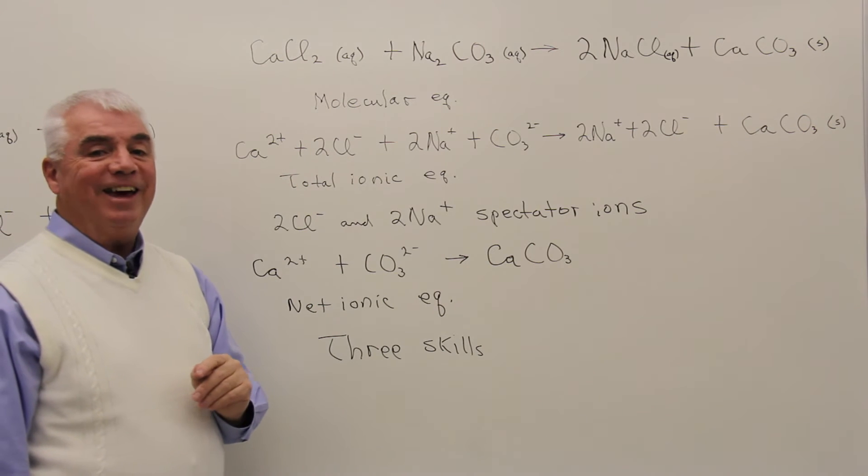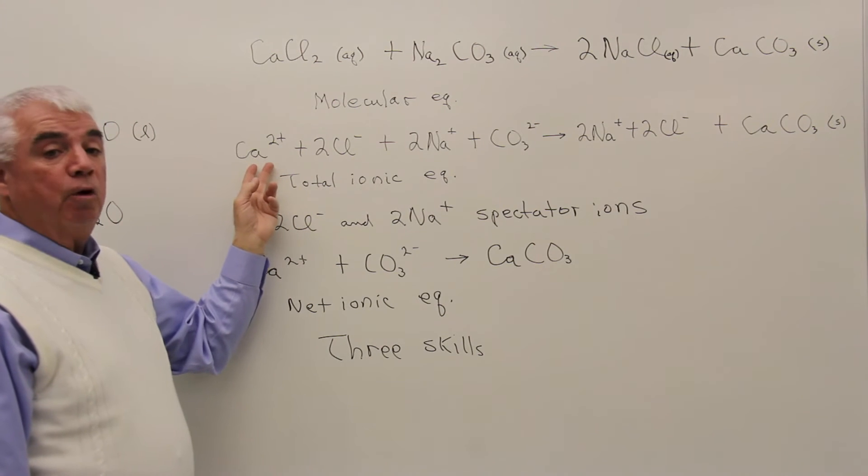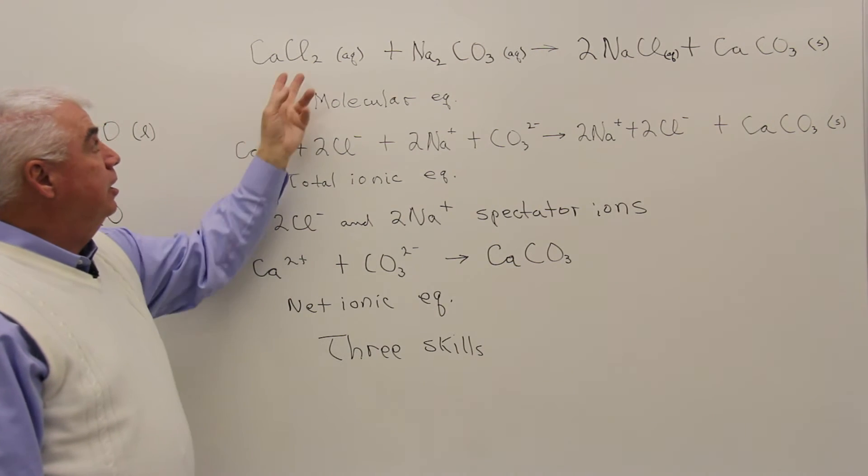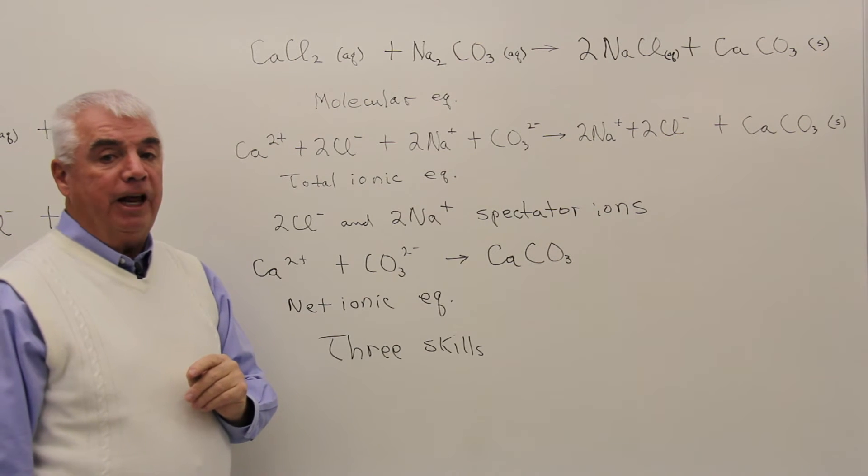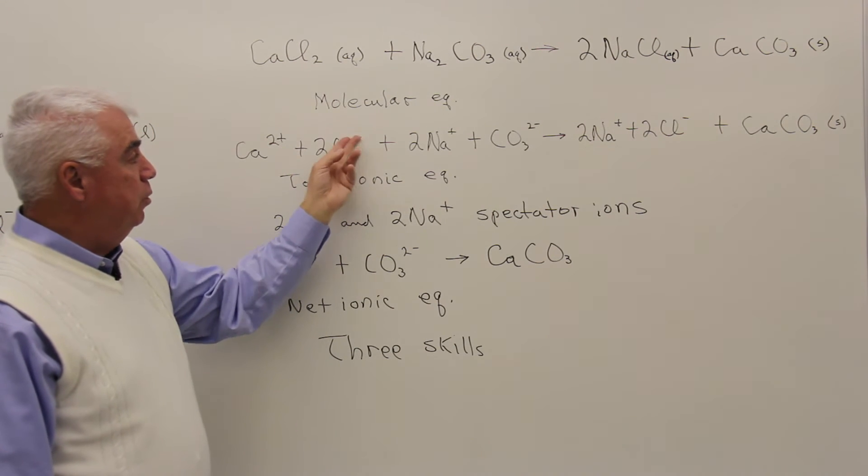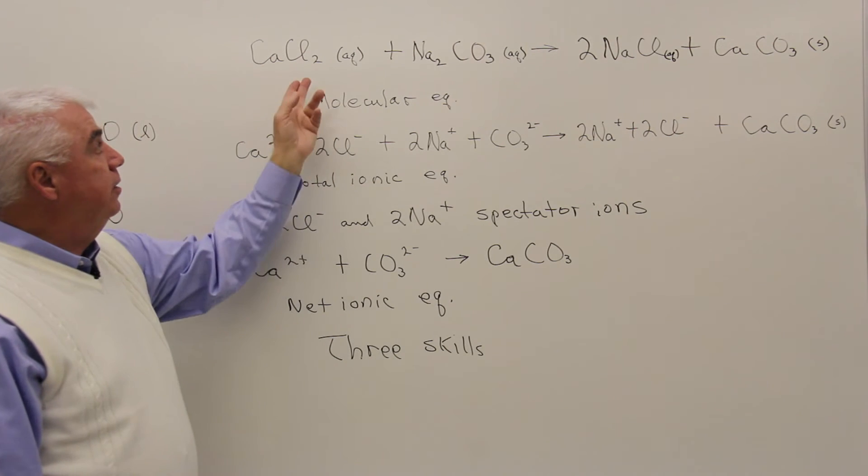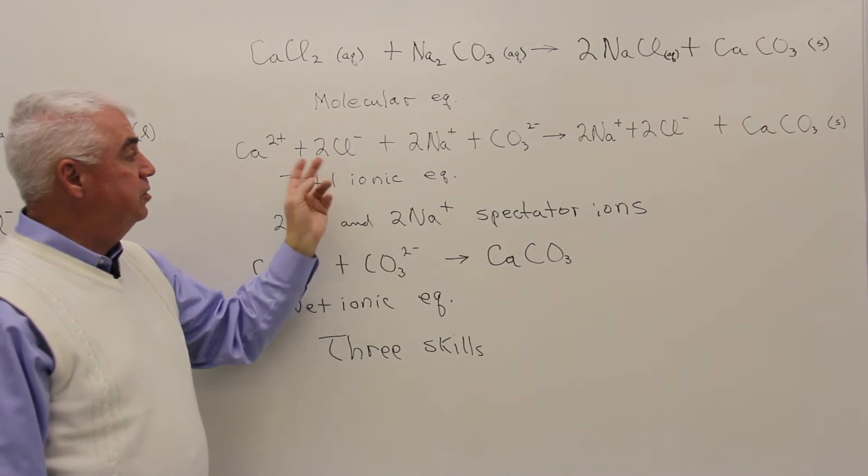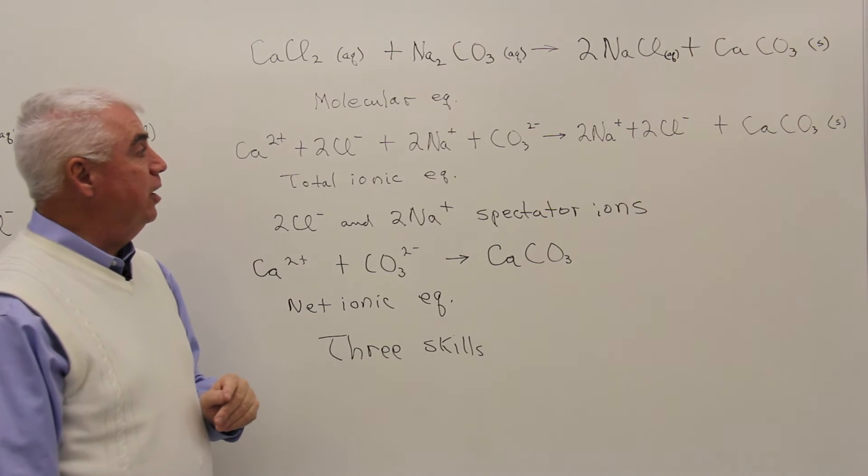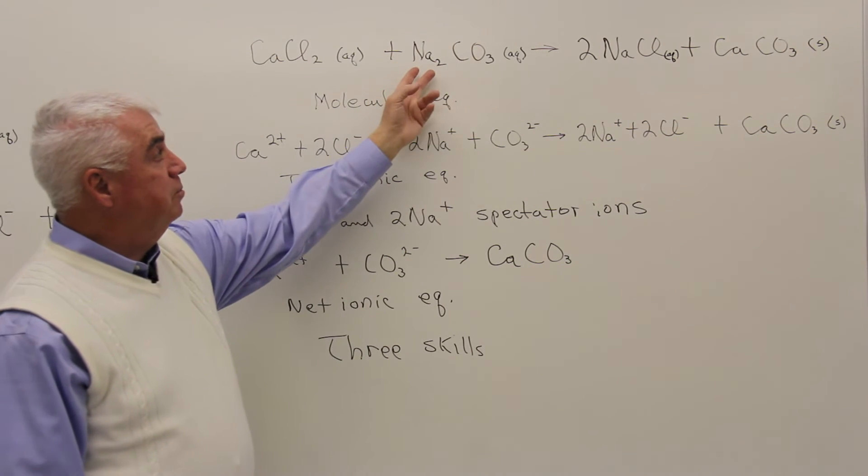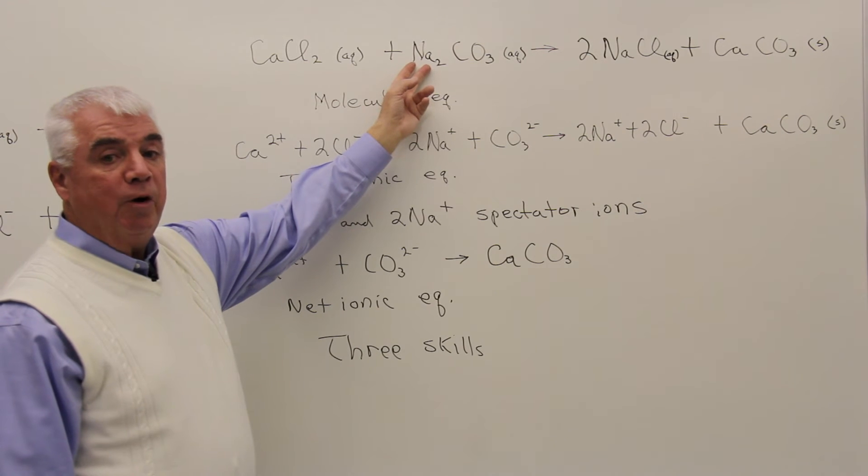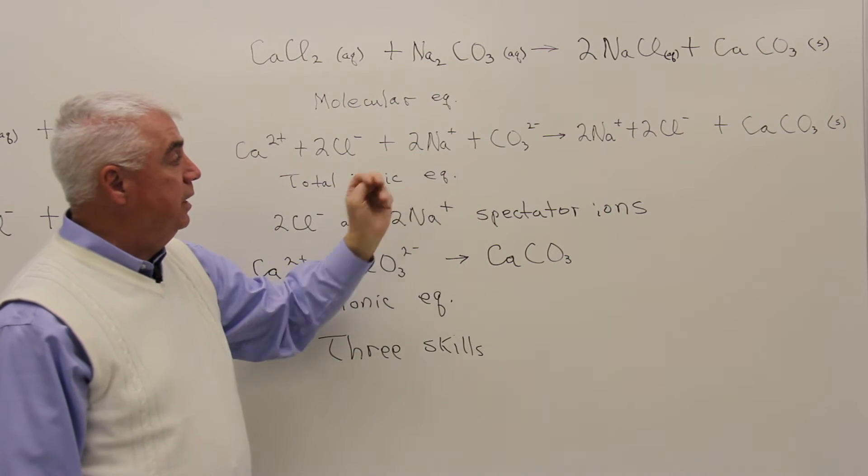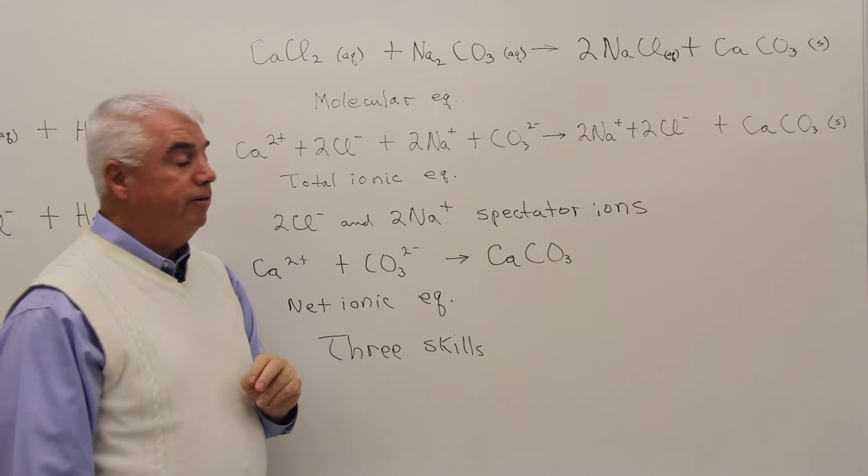Let's write it in total ionic form now. Calcium's in group 2A. That means that it likes to form a 2 plus ion. Chlorine, group 7A, likes to form a minus 1. So we'll write the minus 1. The subscript tells us that there are two chlorines. So we've got to put the 2 Cl⁻. Same way with sodium. The subscript indicates that there are two sodiums, so we'll put that subscript now as a coefficient.